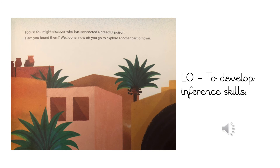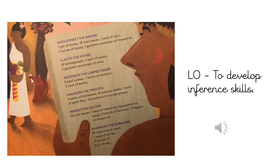Wool Spinket the weaver: one pot of honey, ten ricin leaves, one sack of corn, five loaves of bread, one goatskin container of linseed oil. Katiti the potter: ten tortoiseshells, one sack of cereal, one goatskin container of wine. Wood Cooter the cabinet maker: three beef cutlets, one fistful of hemlock, half a sack of barley.